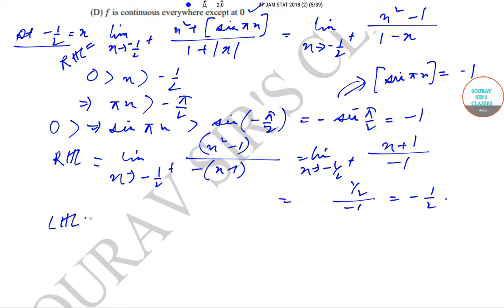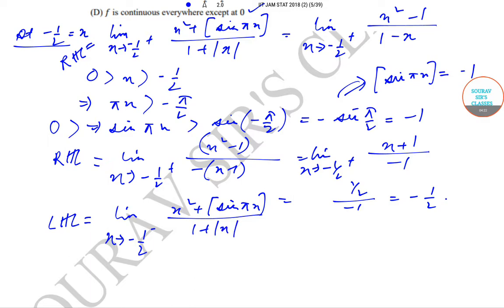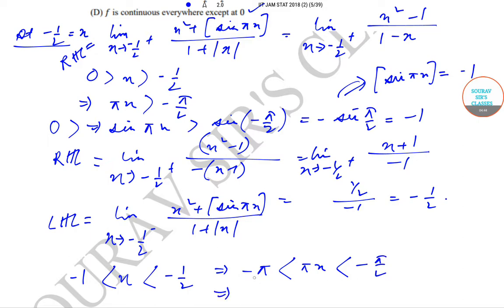Now for the left-hand limit as x → -1/2⁻, we have x² + ⌊sin(πx)⌋ upon 1 + |x|. Here x is less than -1/2, so -π < πx < -π/2. This means πx is in the third quadrant.